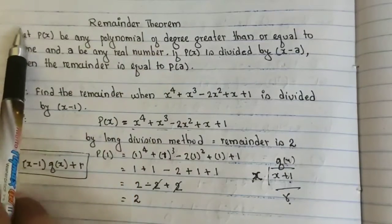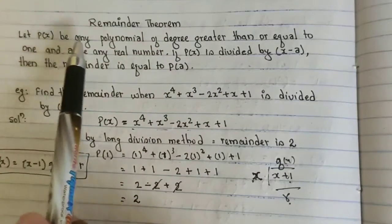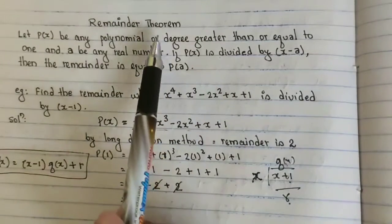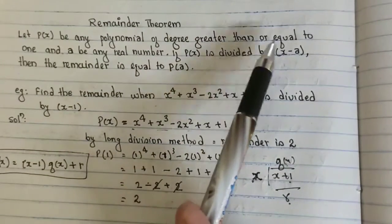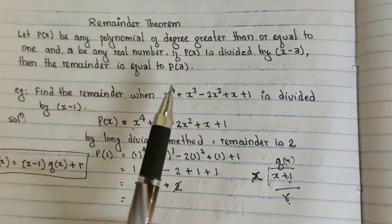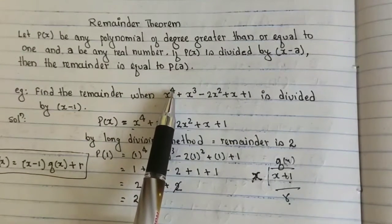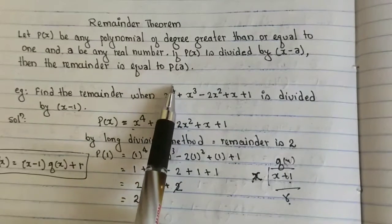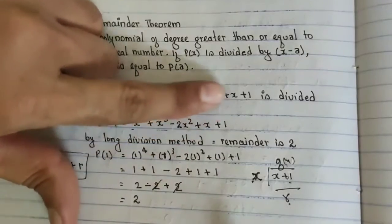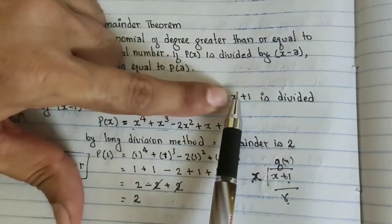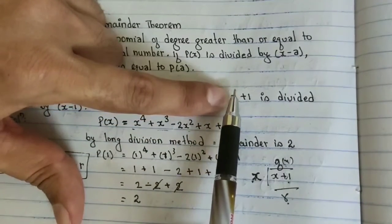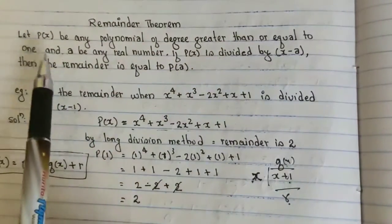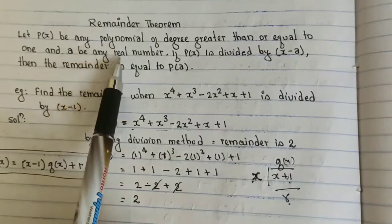Up to here, your P(x) is any polynomial. Suppose here is a given polynomial of degree greater than or equal to 1. Here in this polynomial, your degree is 4. If only this much is given to you, then the degree is 1 because here is nothing means power is 1. So here the degree is greater or equal to 1 and a be any real number.